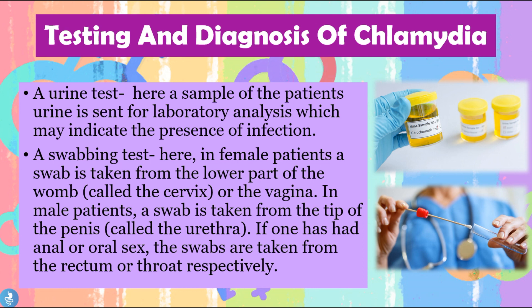We can also do a swabbing test. In female patients, a swab is taken from the cervix or vagina, and in male patients a swab is taken from the tip of the penis called the urethra. If one has had anal or oral sex, swabs are taken from the rectum or throat respectively. The swab looks like a cotton bud in a sterile test tube, which is rubbed against the area of interest and sent for lab analysis to detect the Chlamydia trachomatis bacteria.